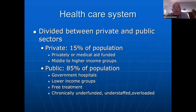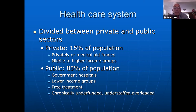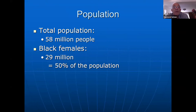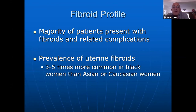Looking at the health system in South Africa: it is divided between private and public sectors. The private sector accounts for only about 15% of the population, funded by medical aids and covering mainly middle and higher income groups. The public sector covers more than 85% of the population — lower income or no income — treated in government hospitals where treatment is free. Most of these hospitals are chronically underfunded, understaffed, and overloaded with patients. South Africa has a population of about 58 million, with half being black females — which is important in the context of fibroid prevalence.